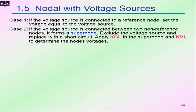Like mesh analysis, nodal analysis can be different when a voltage source is present. There are two cases. For case 1, if the voltage source is connected to a reference node, we can use standard nodal analysis and set the voltage equal to the voltage source. For case 2, if the voltage source is connected between two non-reference nodes, we form a super node — we exclude the voltage source and replace it with a short circuit, apply Kirchhoff's current law to the super node, and Kirchhoff's voltage law to determine the node voltages.